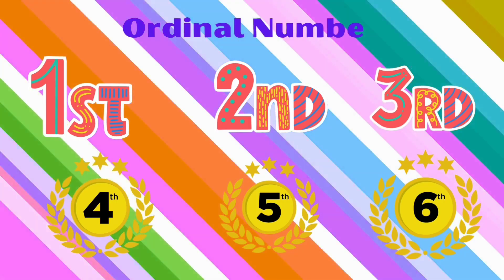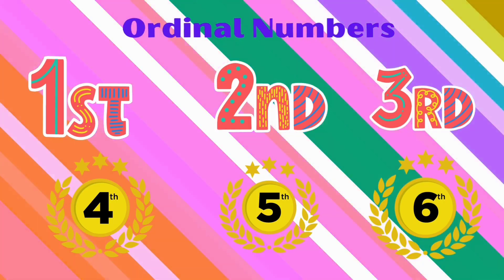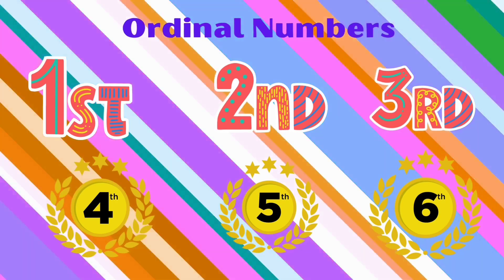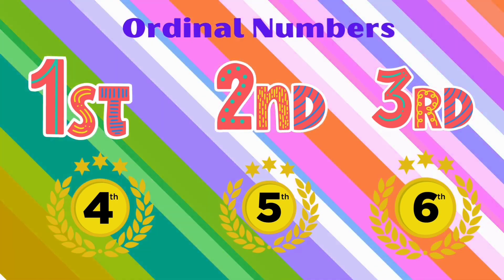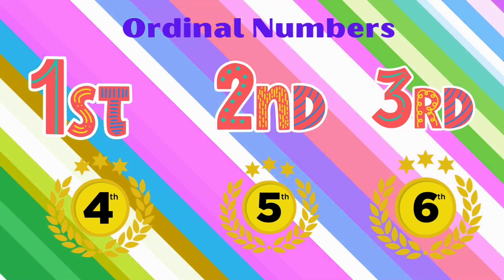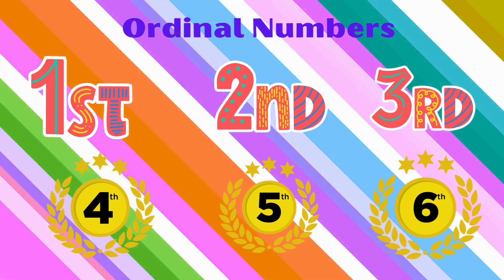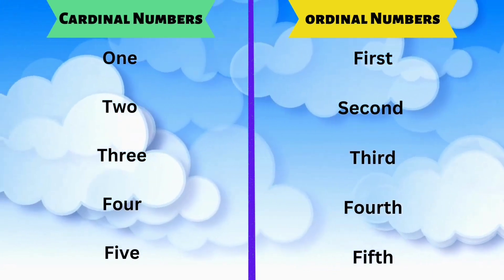Ordinal numbers: 1, 2, 3, 4. It is showing the order or sequence in relation to other numbers.